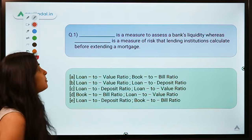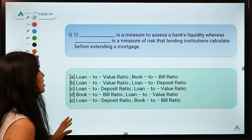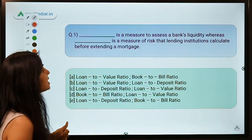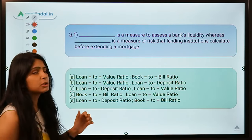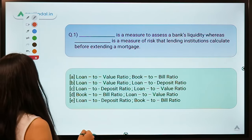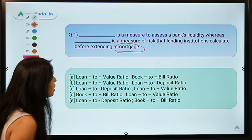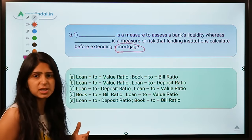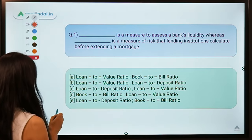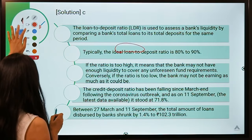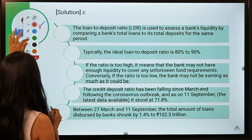Question number one: 'Dash is a measure to assess a bank's liquidity, whereas dash is a measure of risk that lending institutions calculate before extending a mortgage.' You must know the meaning of mortgage, which was discussed in a previous session. The correct answer is option C.